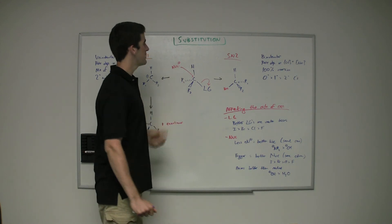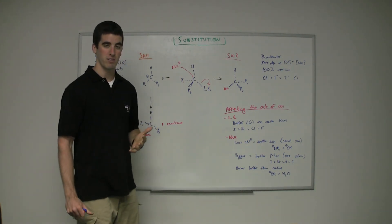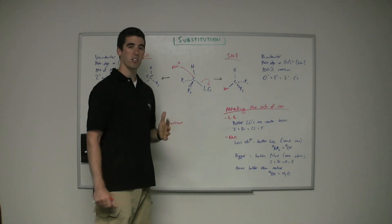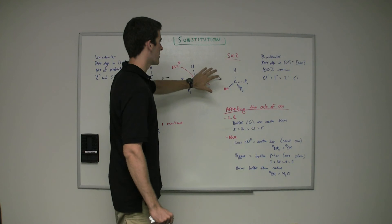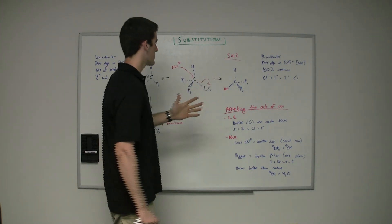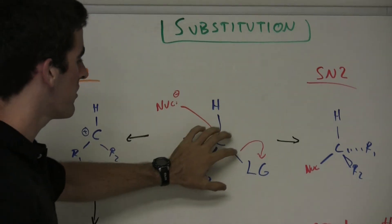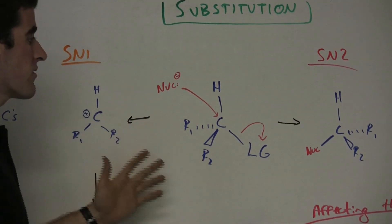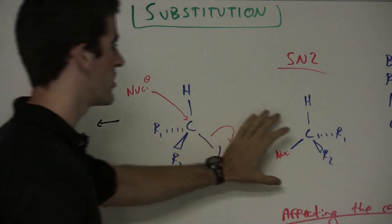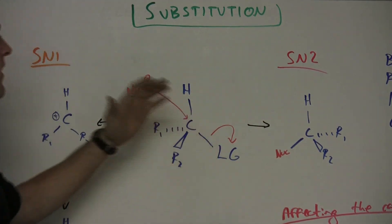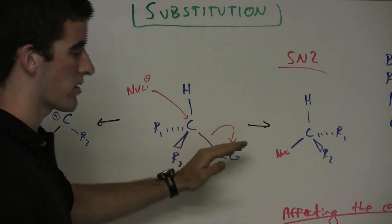For substitution, keep in mind that you're only looking at sp3 carbons that have leaving groups — those are the only things that can undergo substitution reactions. SN2 is the easy one: it's just that one-step bimolecular reaction. The nucleophile comes in and kicks off the leaving group, and because of that there's going to be some inversion — the R groups are inverted to the other side, the nucleophile takes that spot, and the leaving group is kicked off.